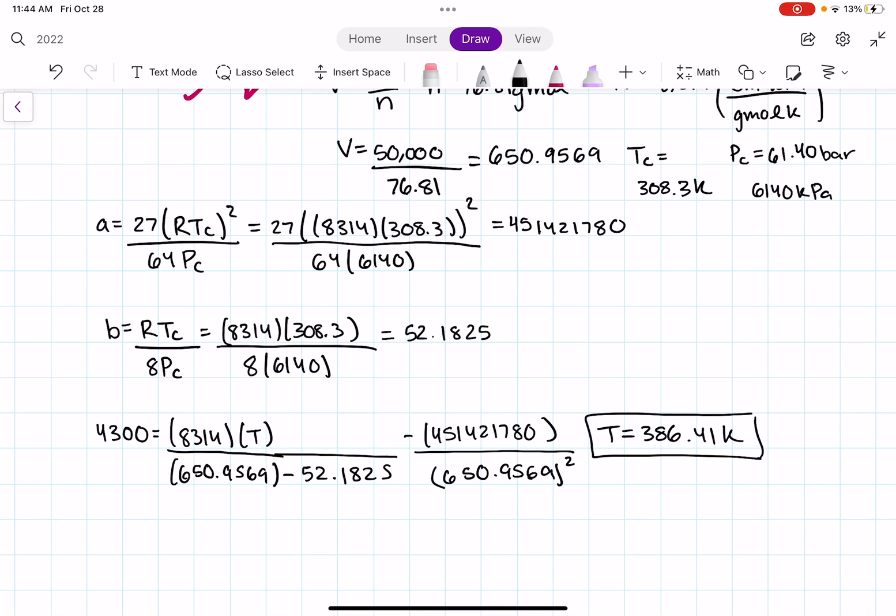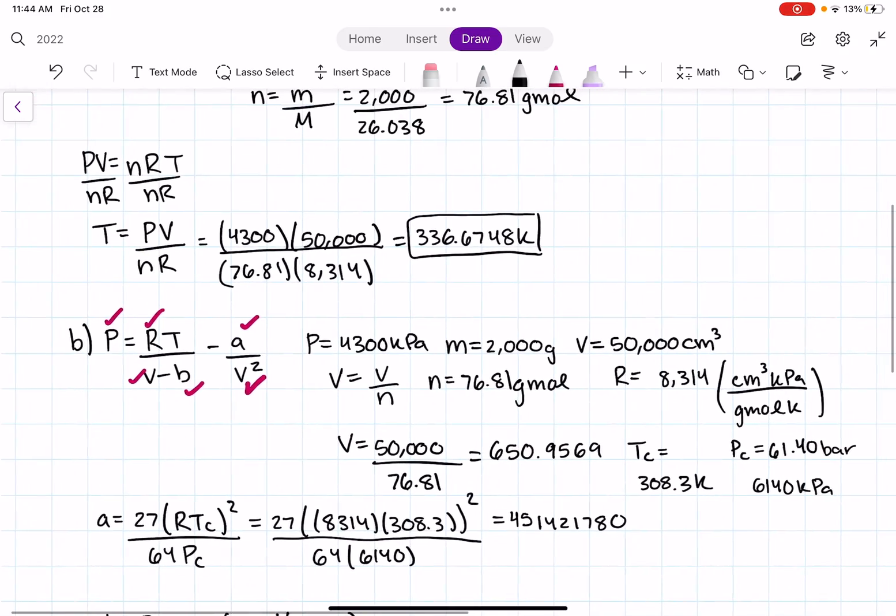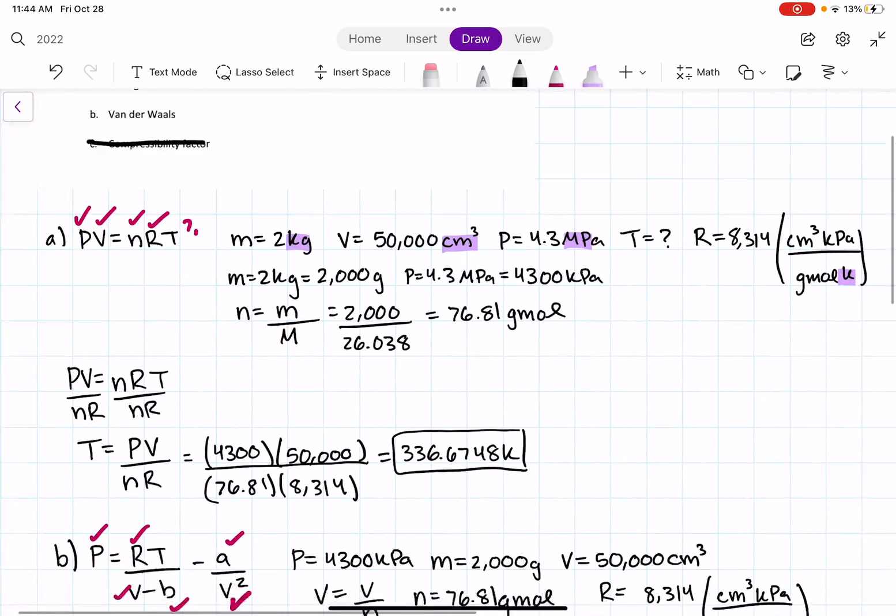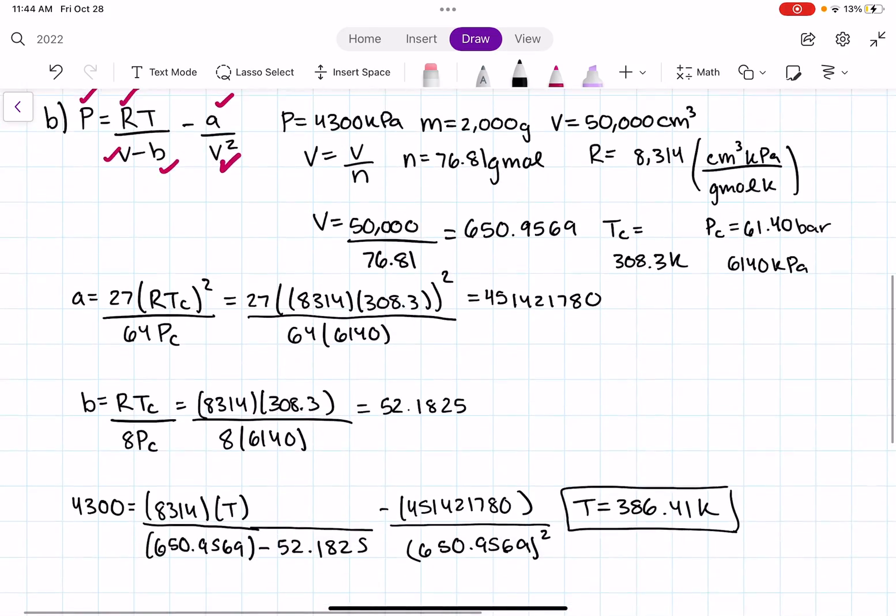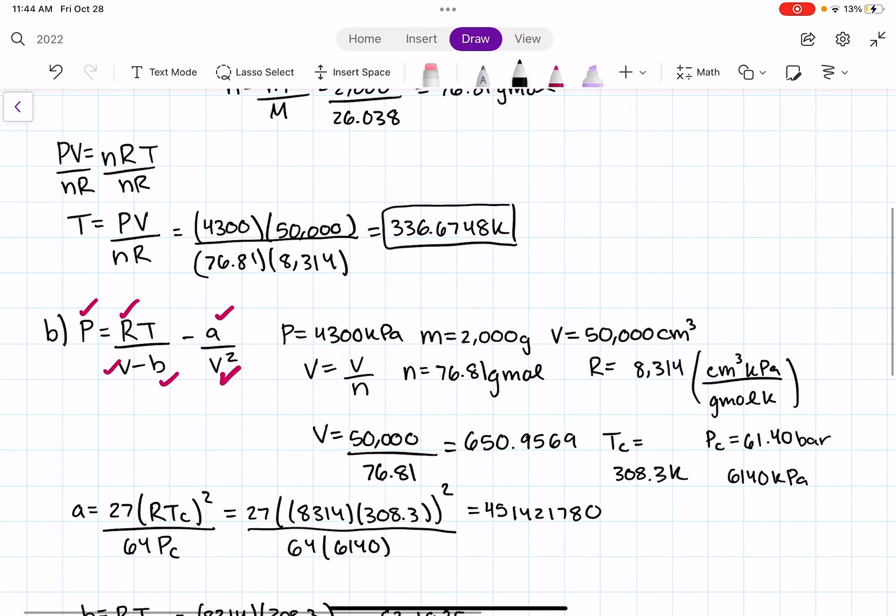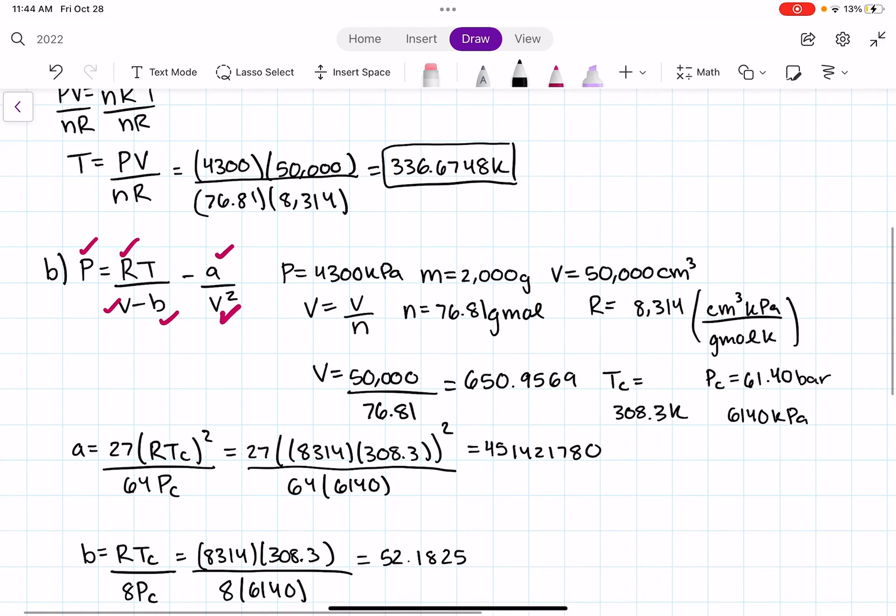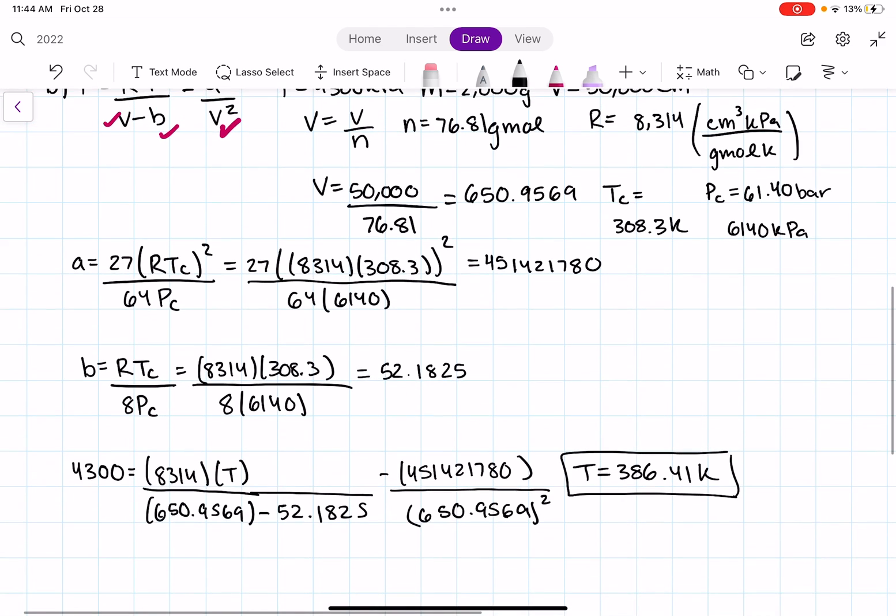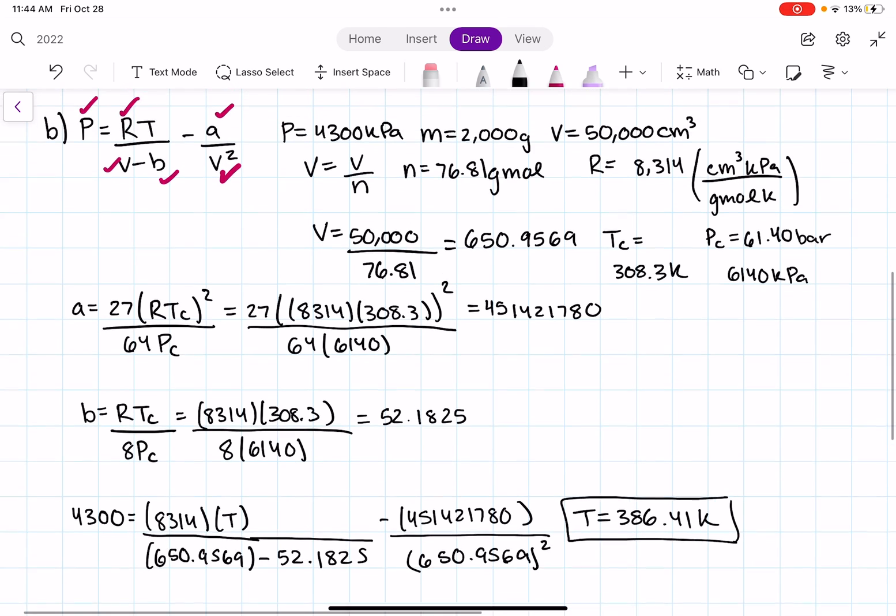Temperature using my Vanderbilt equation is kind of similar to my ideal gas equation. So under these conditions, acetylene kind of somewhat acts like an ideal gas, since the temperatures for both equations are somewhat similar.